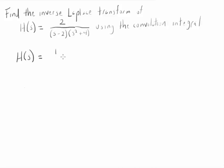So I'm going to write this as 1 over S minus 2 times 2 over S squared plus 4. Because I know how to take the inverse Laplace transform of the first term and of the second term.